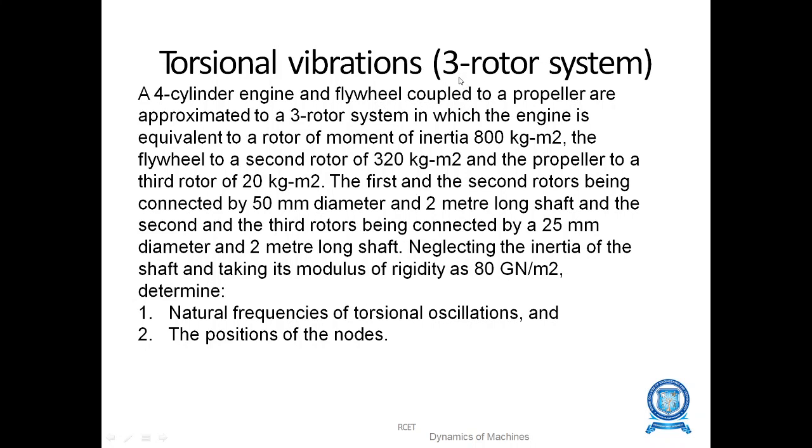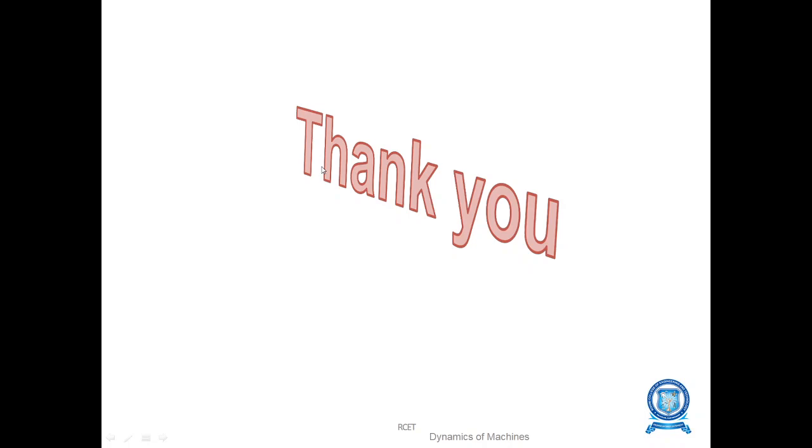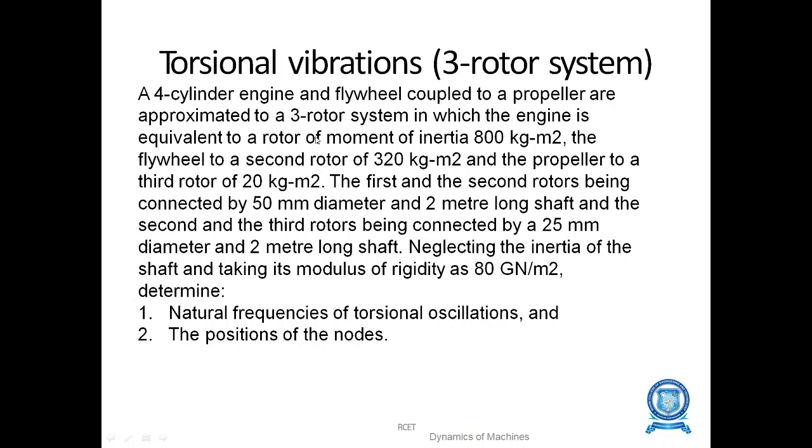The torsional vibration for three rotor system for this problem is given as engine is equivalent to rotor moment of inertia. K value is given. Flywheel is the second rotor and propeller is the third rotor. Similar to the previous problem, it is given with the specific components. The first and second rotors is connected by the diameter is 50 mm having length 2 meter and second and third is connected by 25 mm at a distance of 2 meter long shaft. Take modulus of rigidity 80 giga newton per meter square. Neglect the inertia of the shaft. Find natural frequency and position of the nodes. Similar to the previous problem, substitute the values in the formula and you will get the answer. Thank you.